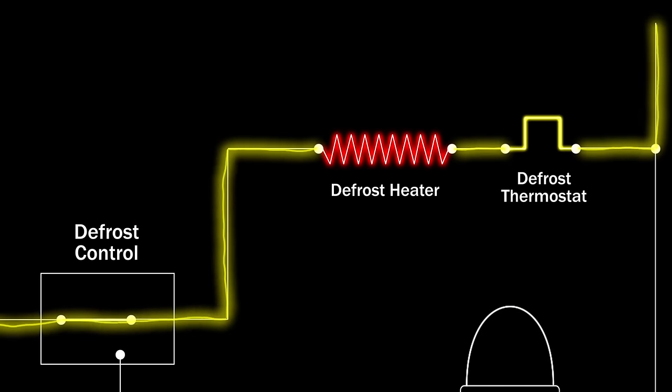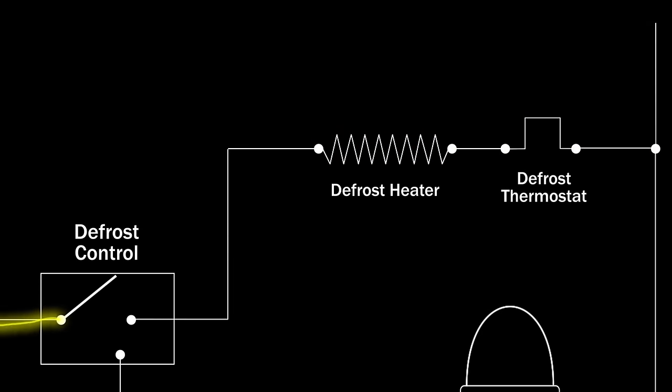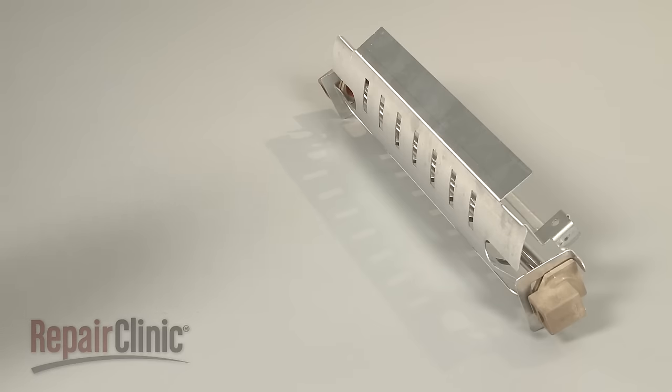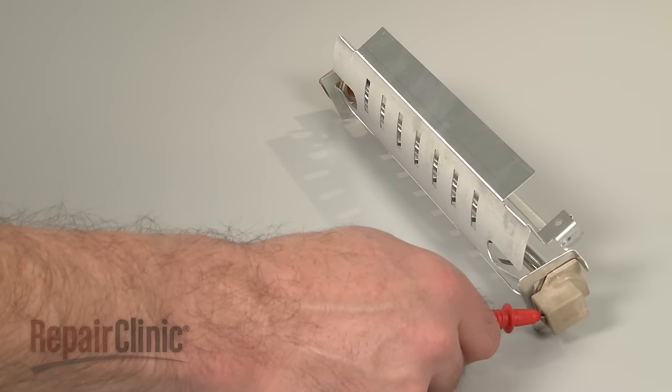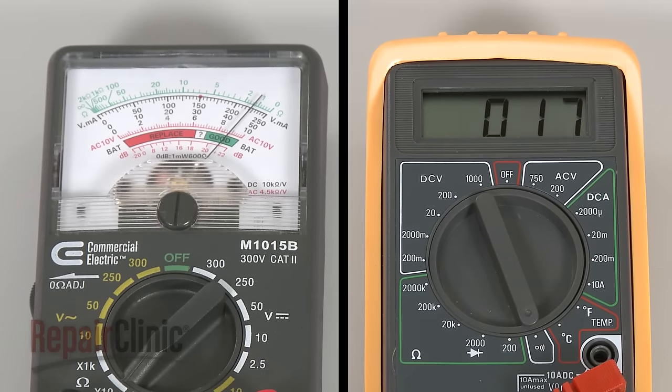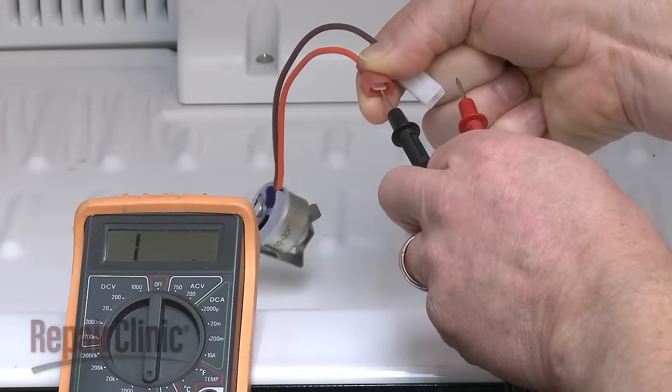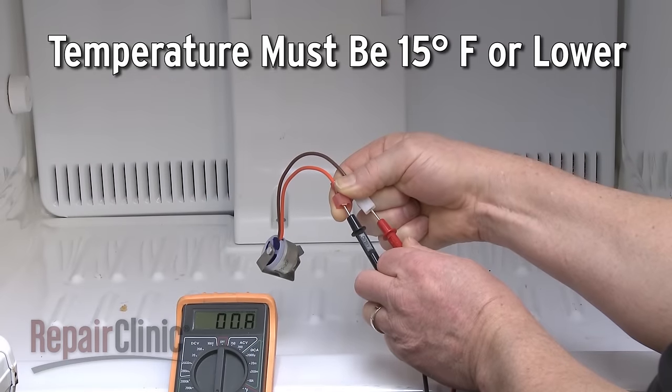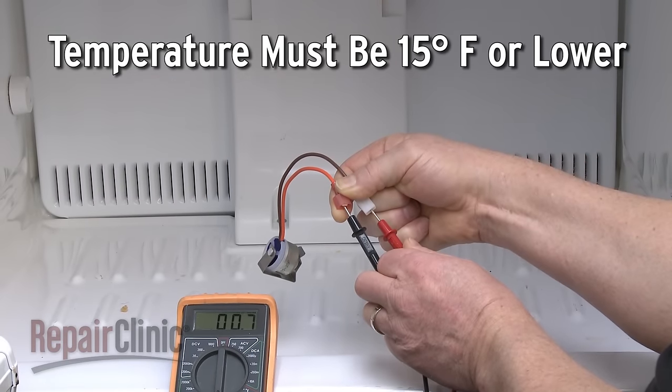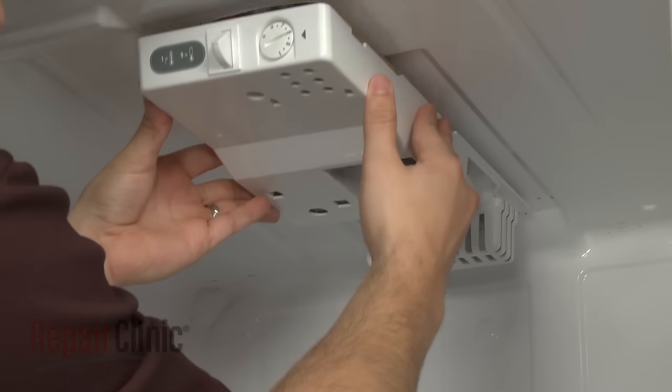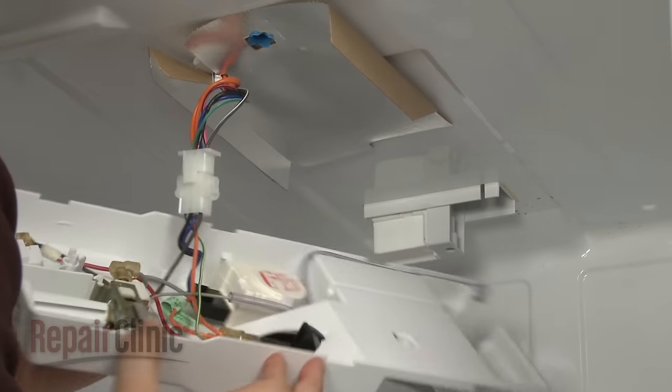If the control, thermostat, or heater fails, the evaporator coils will likely frost over, causing poor cooling in the refrigerator. You can test both the heater and thermostat for continuity to determine if a continuous electrical path is present. Be aware you'll need to test the thermostat at a temperature of 15 degrees Fahrenheit or lower for a proper reading. If both the thermostat and heater test positive for continuity, it's likely that the control is defective and will need to be replaced.